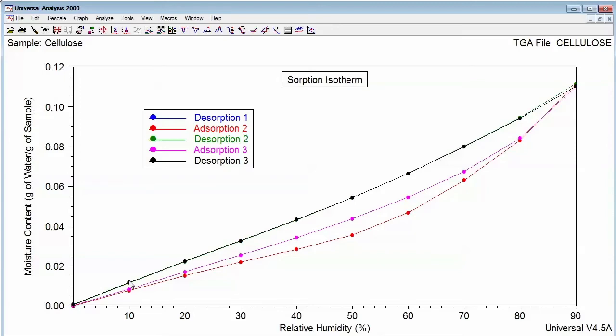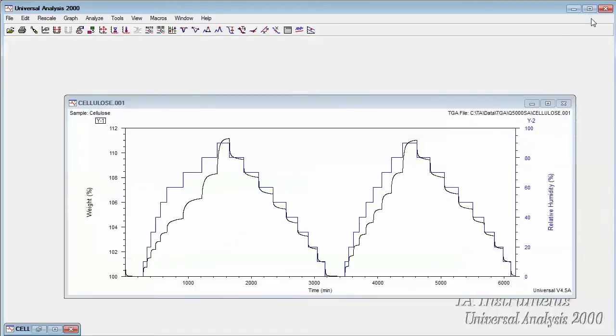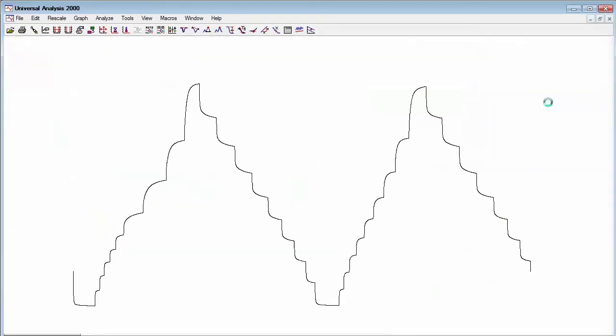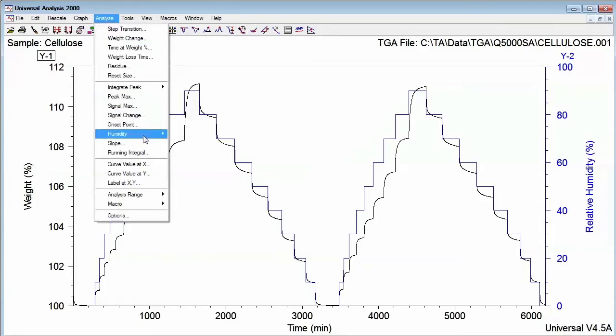In addition to generating a Sorption Isotherm plot, you may also perform various analysis for surface area analysis using the BET or GAB models. In universal analysis, we have generated a Sorption Isotherm using a Q5000 SA data file.